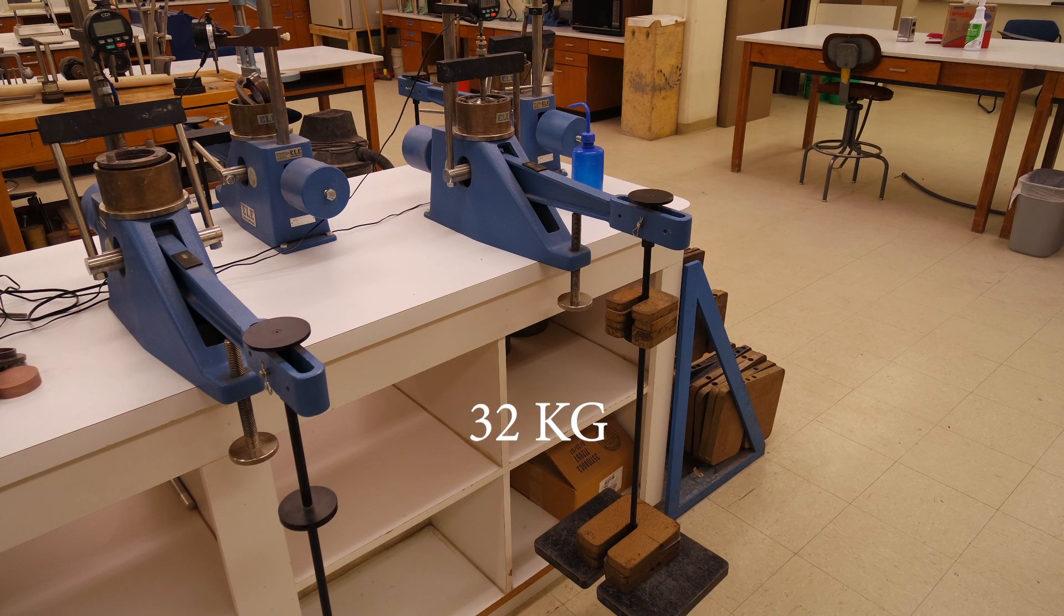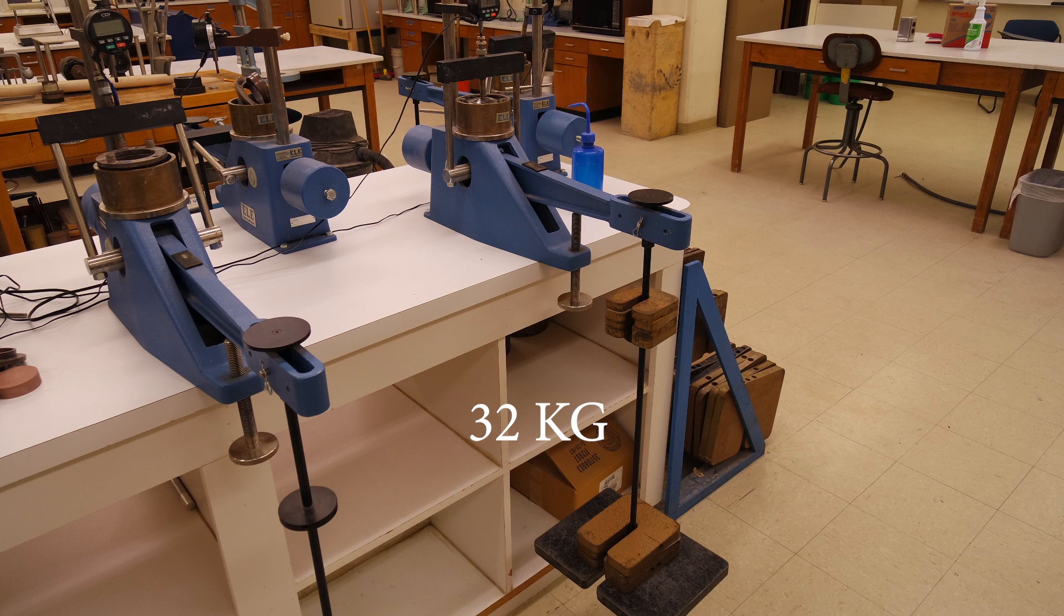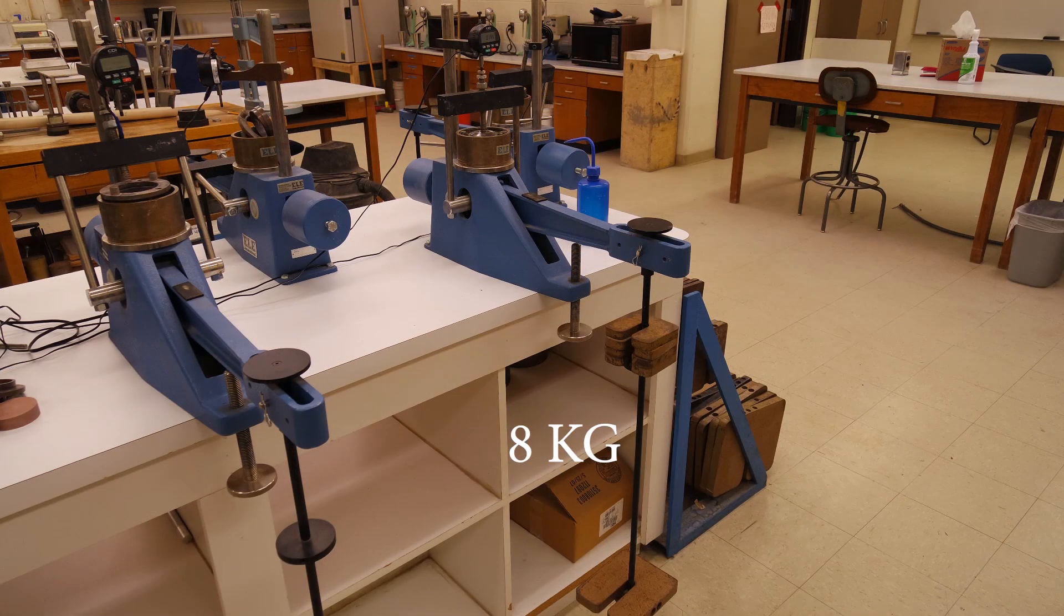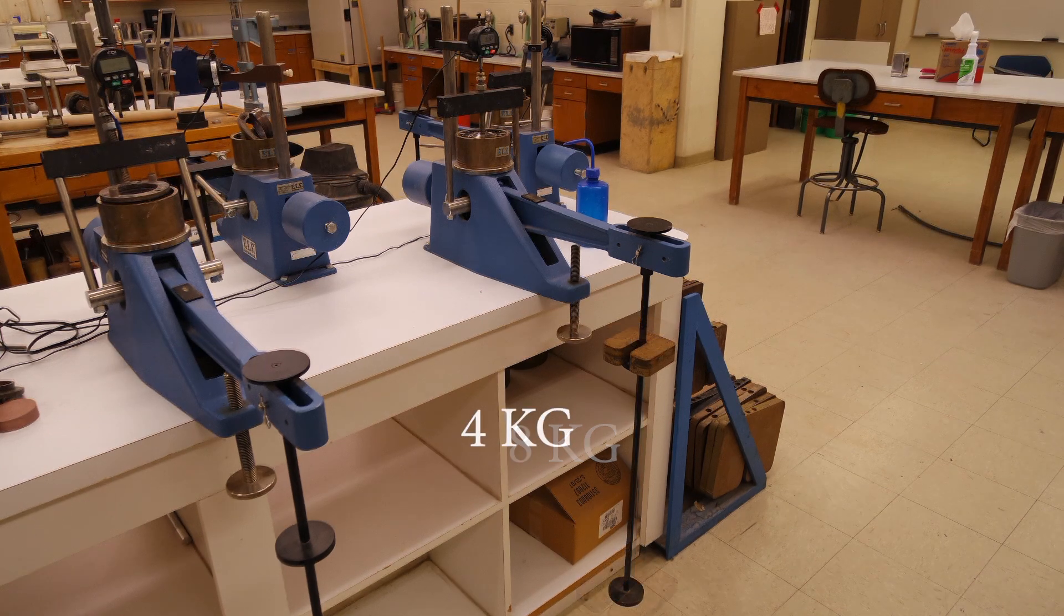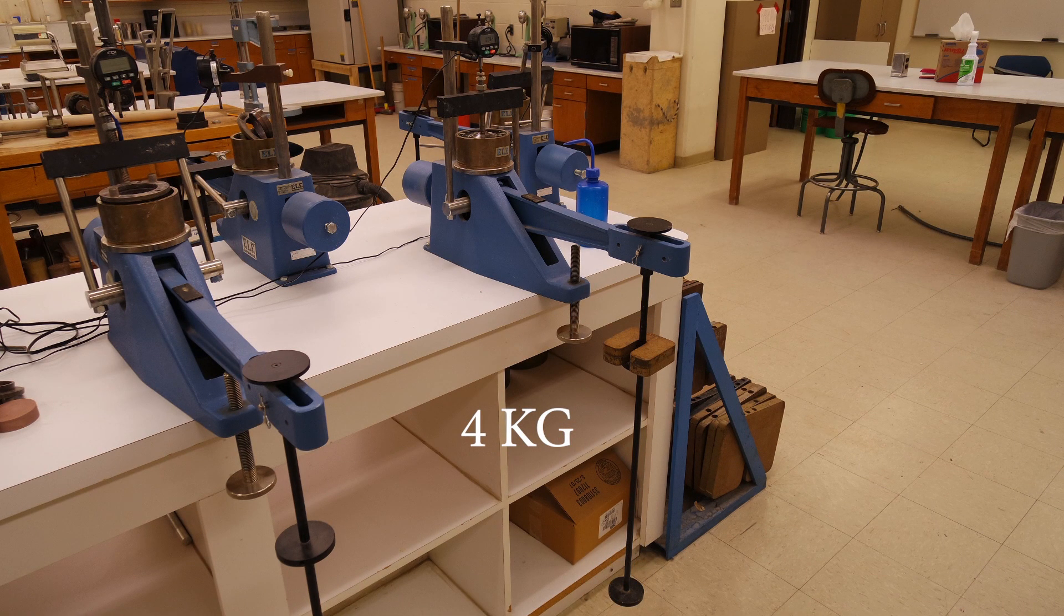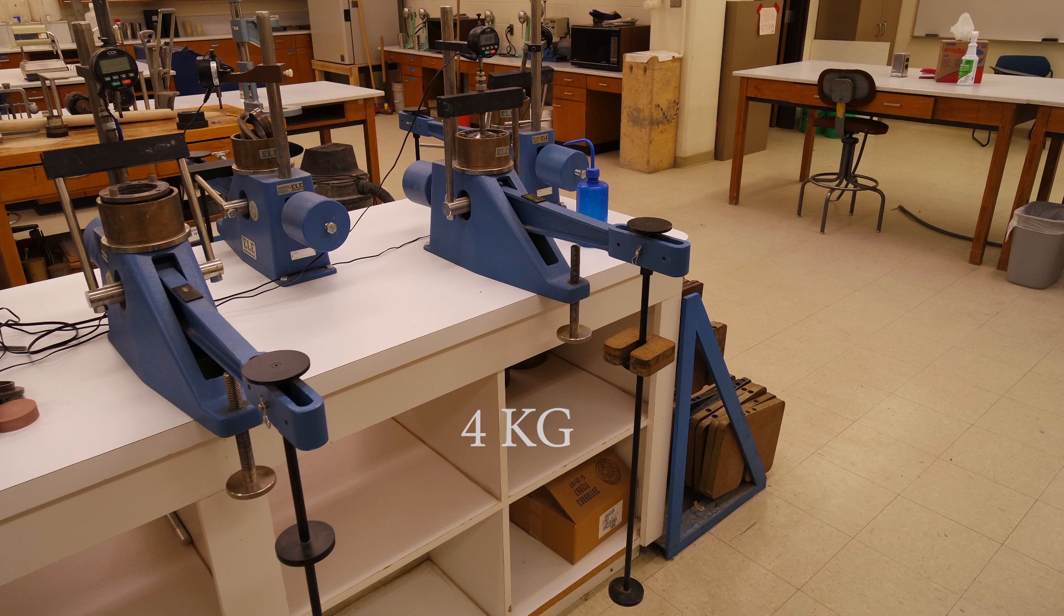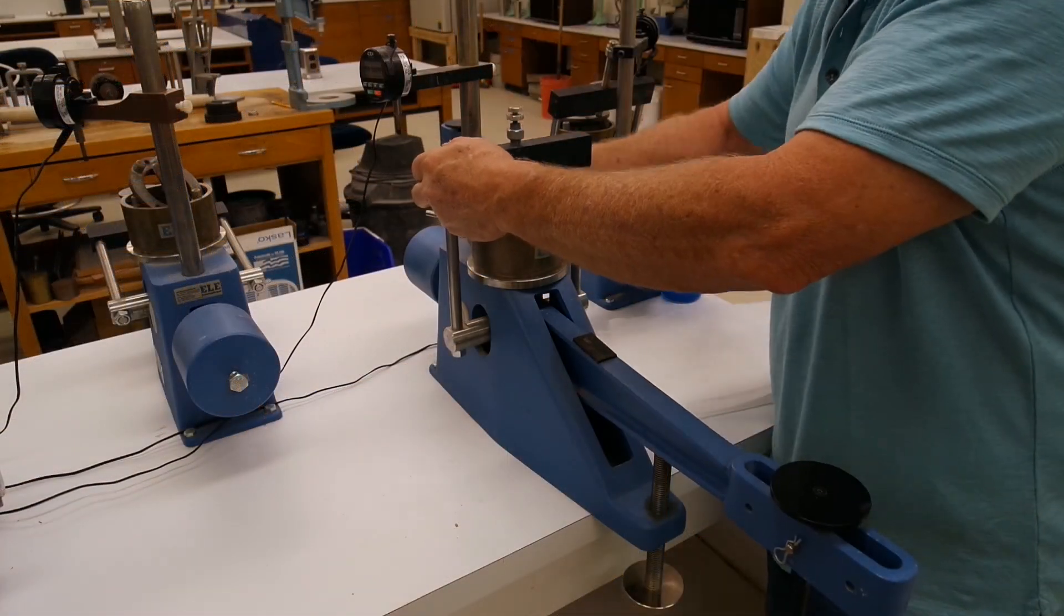After we have completed our consolidation loads, we will unload the sample in increments to get a rebound or reconsolidation curve. Once we have finished unloading the sample, we will remove the ring and the soil from the consolidation machine.